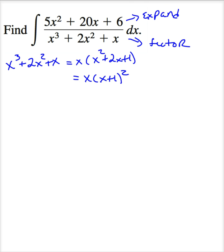And now rewrite the entire equation. 5x squared plus 20x plus 6 divided by, and use this factored form, x times x plus 1 squared.